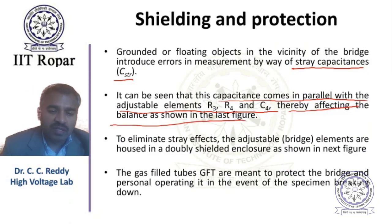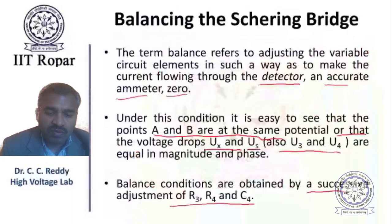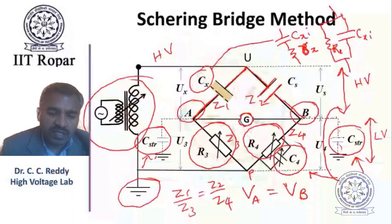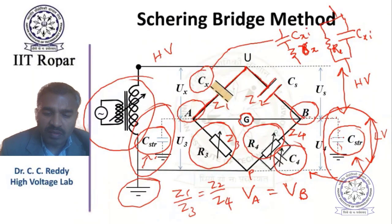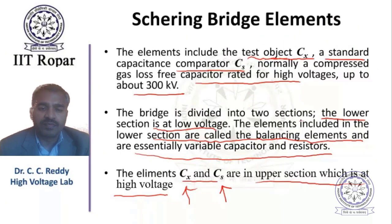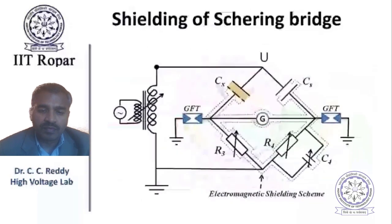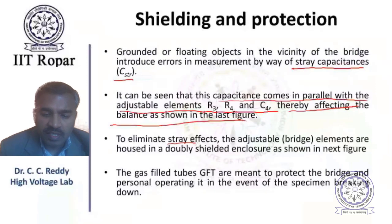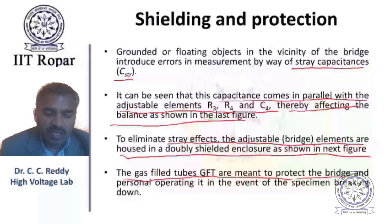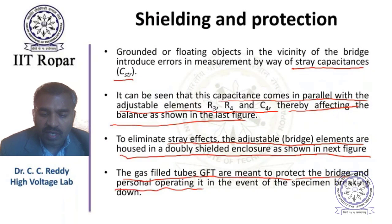To eliminate stray effects, the adjustable bridge elements are housed in a doubly shielded enclosure. Gas-filled tubes (GFT) are used to protect the bridge and personnel in the event of breakdown. If a specimen breaks, these protection devices ensure safety for people and equipment. When voltage exceeds a threshold, these devices will conduct.